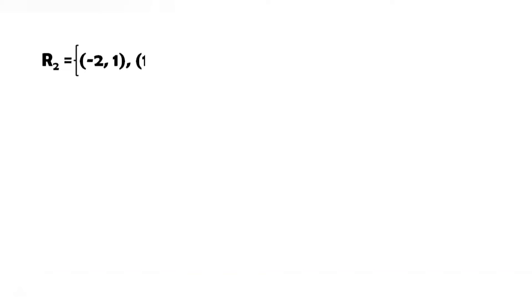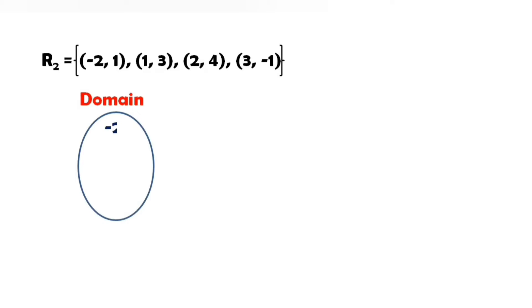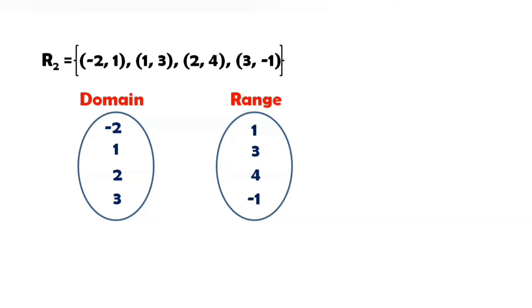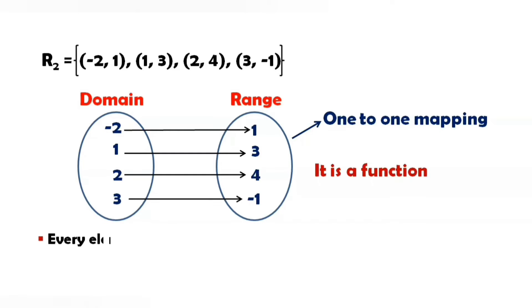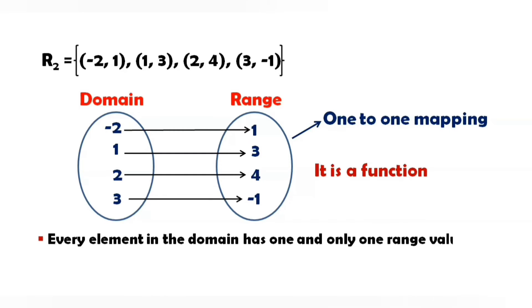Let us consider another relation R2 = {(-2, 1), (1, 3), (2, 4), (3, -1)}. Now let us show the mapping between the domain and the range. Domain: {-2, 1, 2, 3} and range: {1, 3, 4, -1}. Minus 2 is mapped to 1, 1 is mapped to 3, 2 is mapped to 4, and 3 is mapped to minus 1. This type of mapping is called one-to-one mapping, and this is a function because every element in the domain set has one and only one image in the range set.